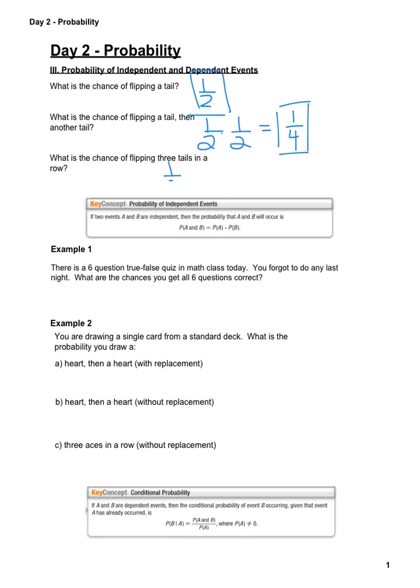So one half times one half is one fourth. What are the chances of flipping three tails in a row? Well, that's going to be one half to the third, which is one over eight. So just like counting when we're looking for event A and event B, we're going to multiply those two probabilities together.